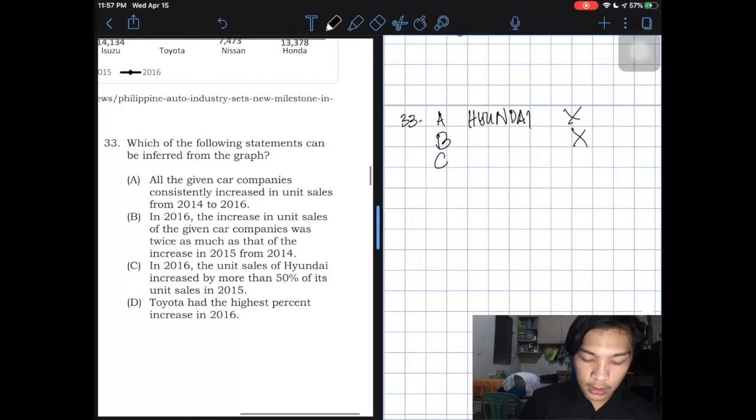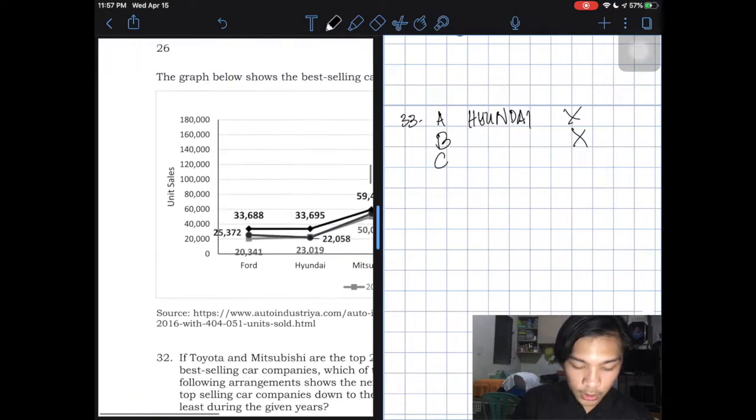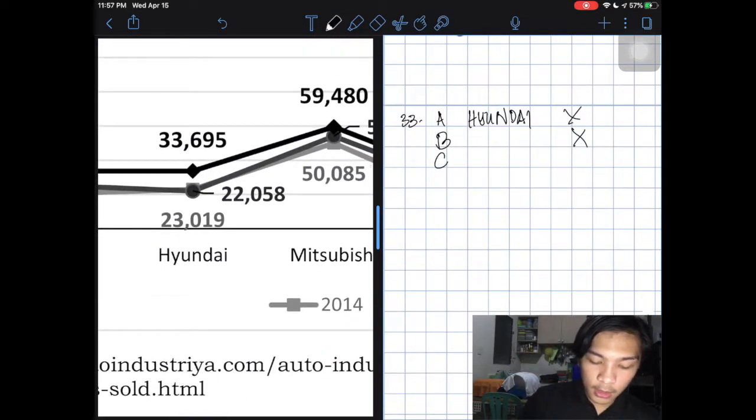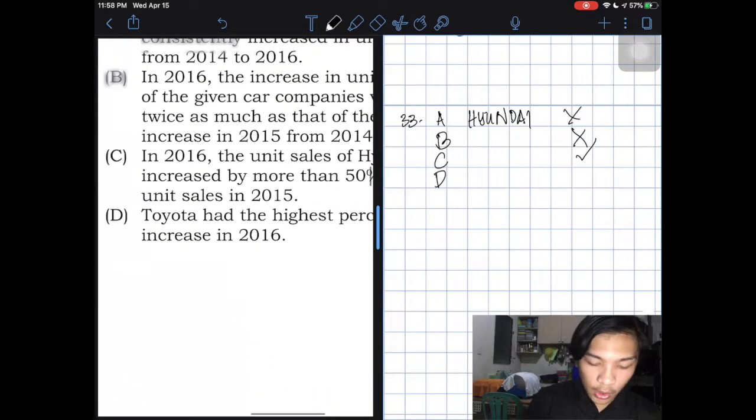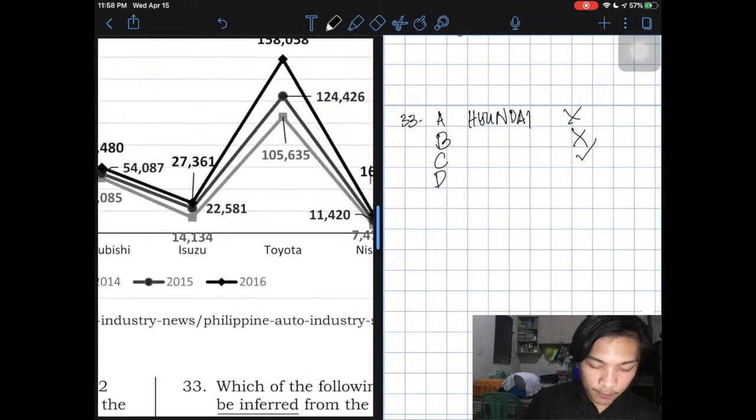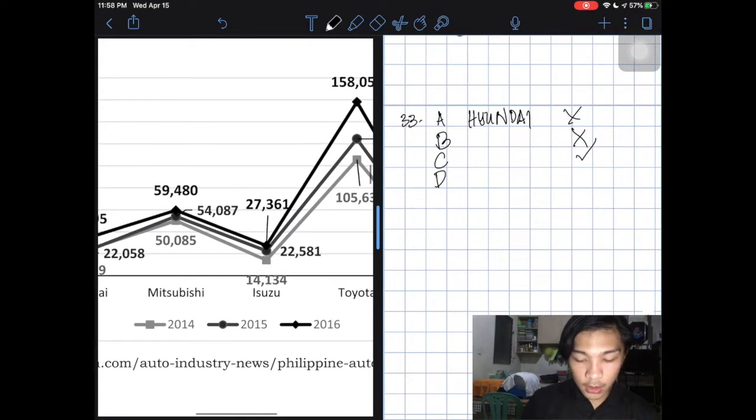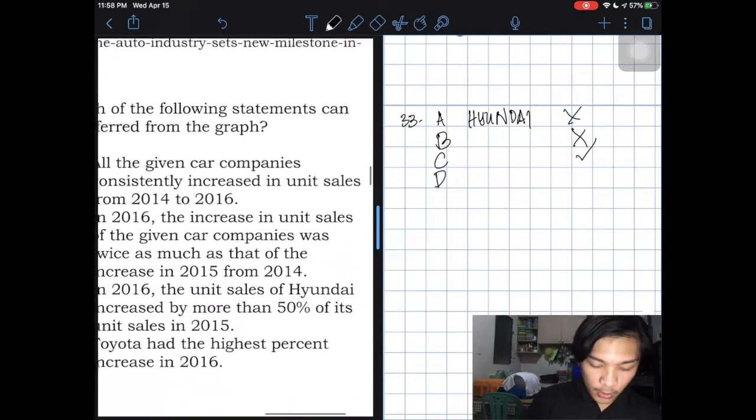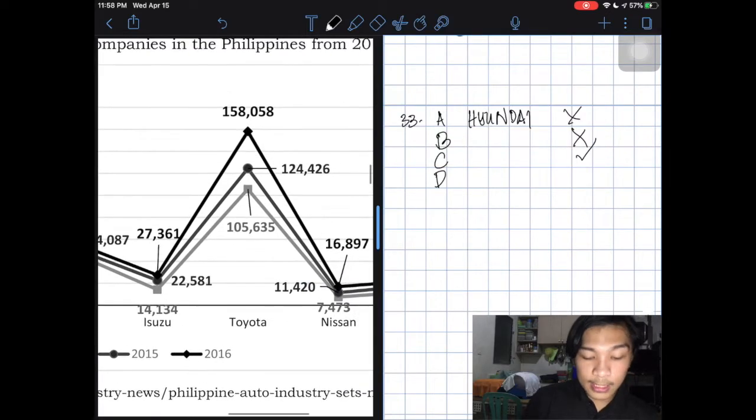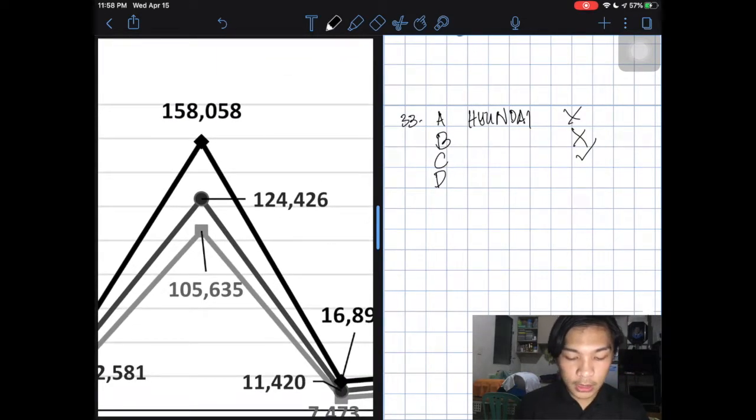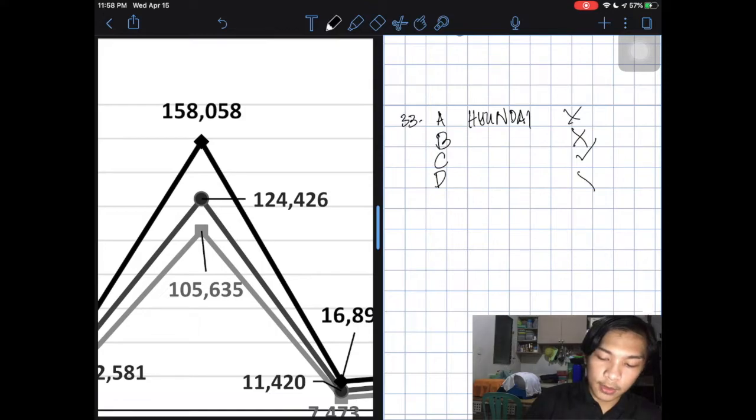Letter C, in 2016, the unit sales of Hyundai increased by more than 50% of its unit sales in 2015. So check. The 50% of 22,000 is 11,000, and then the increase is 11,000. It became 33,000, which is correct. So letter D, just to check, Toyota had the highest percent increase in 2016. In 2016, remember, 50% was the increase of Hyundai. According to this, Toyota is supposedly the highest increase. Based on this, 124,000, this is just 30% increase. So this is wrong. So the answer here is letter C.